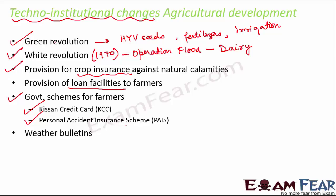Weather bulletins were also introduced to keep farmers updated about upcoming weather, since weather plays a very critical role in agriculture. For crops that need rainfall, farmers need to know whether it is going to rain in the coming days so they can plan their agricultural activities accordingly. Weather bulletins were forecasted on televisions as well as radio so that farmers could stay informed about weather changes and act accordingly.